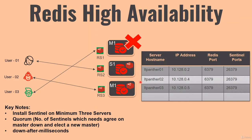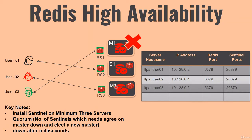Whenever the master goes down, the Redis Sentinels will decide to elect and promote one of the slave nodes to a master node. Also, when one of the slave nodes is converted to a master node, the previous master node is automatically changed to a slave node. So whenever M1 comes back, it is going to become a slave of the newly elected master server.